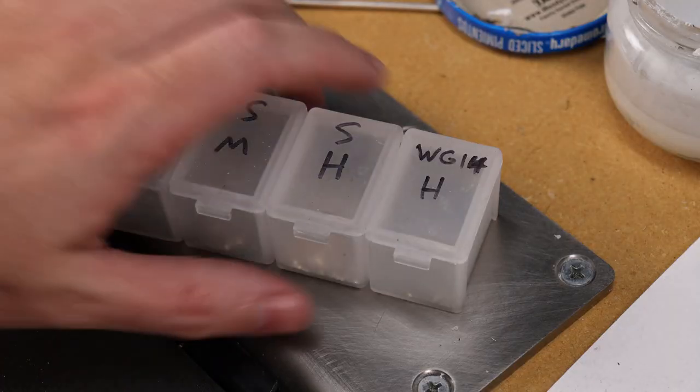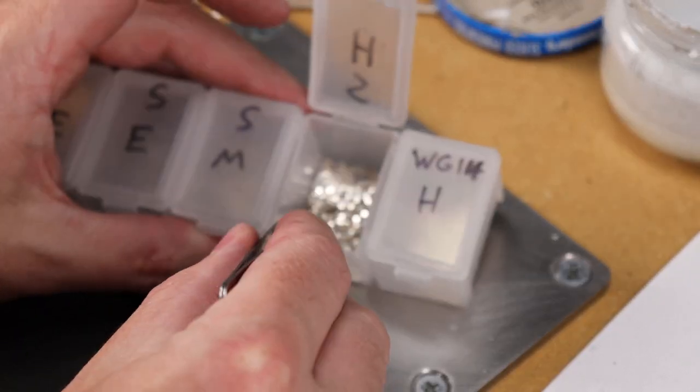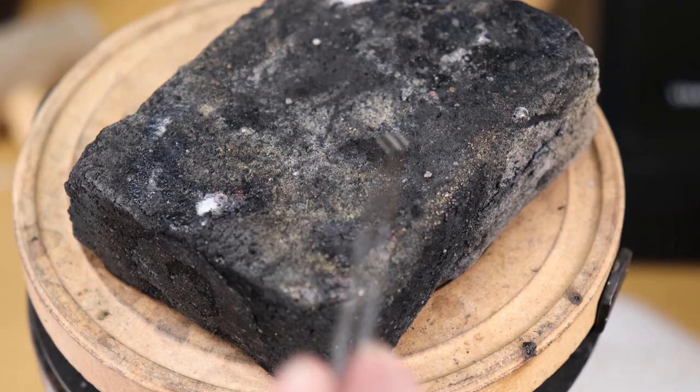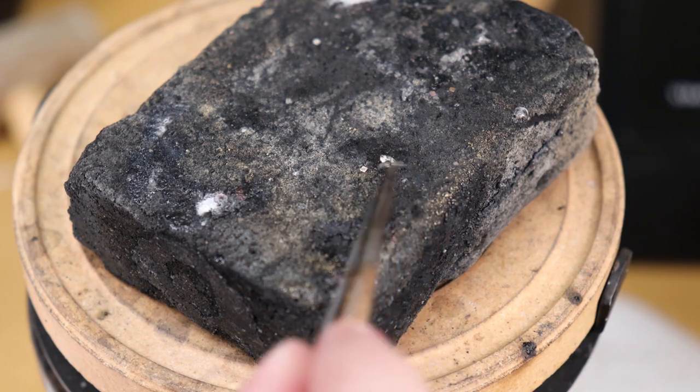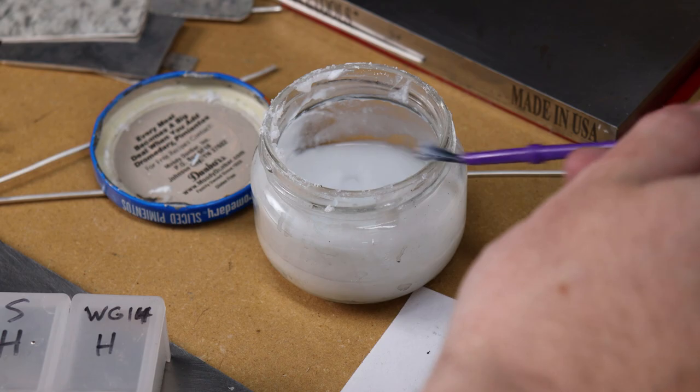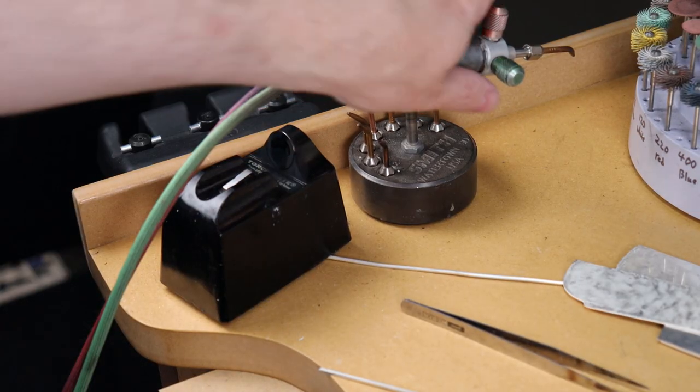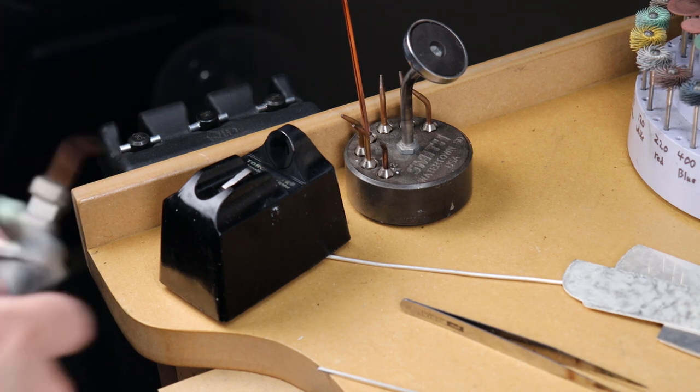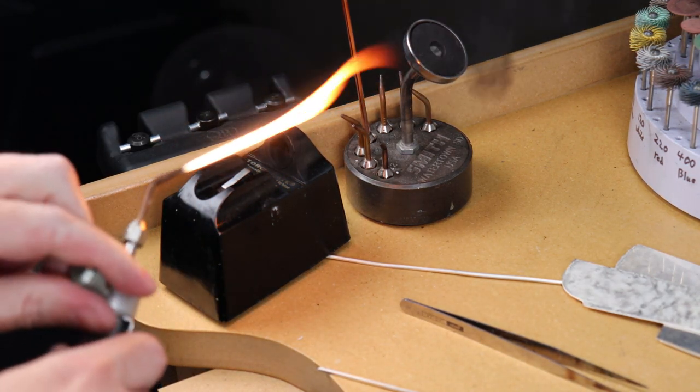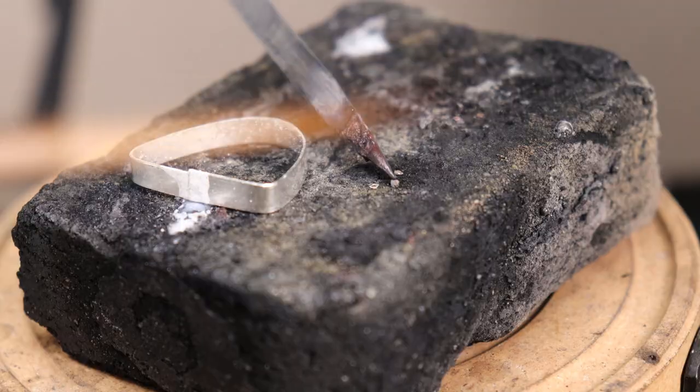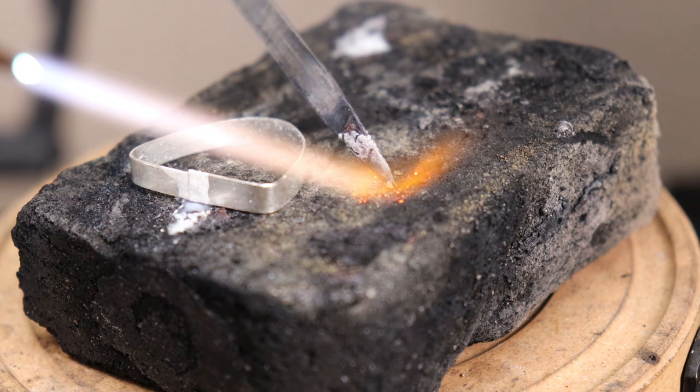When it comes to soldering your bezel shut, you always want to use hard solder for this. This is because it melts at the highest temperature, and when we solder this onto the back plate, it won't melt as we're putting it on. So with that said, I'm going to use some handy flux to flux the joint. I'm going to be using my Smith's Little Torch, which happens to have an oxygen acetylene setup.